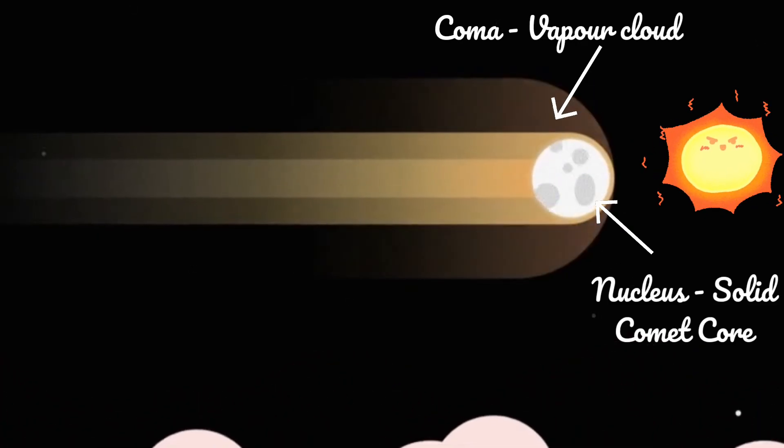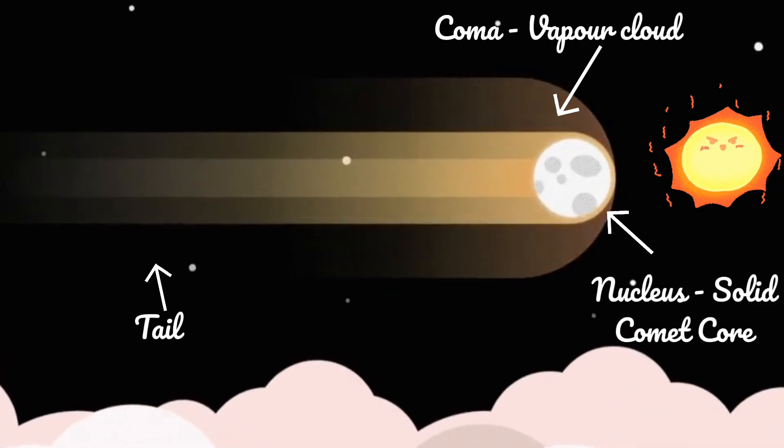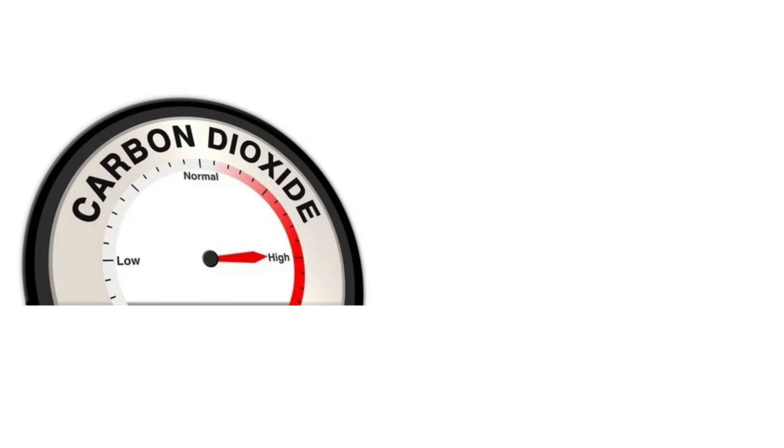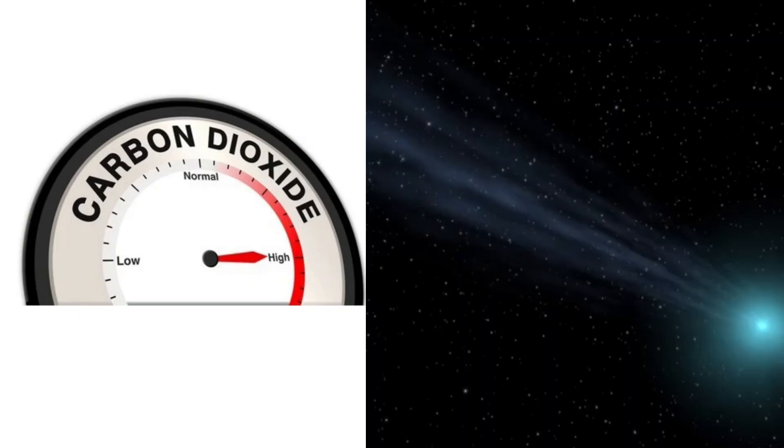That's the fuzzy cloud around it and a tail that stretches millions of kilometers. Now, here's what surprised scientists. Atlas is unusually rich in carbon dioxide. That means it started releasing gas even when it was far away from the sun.